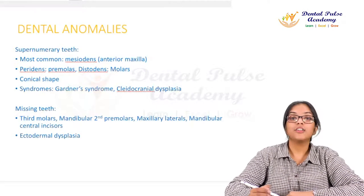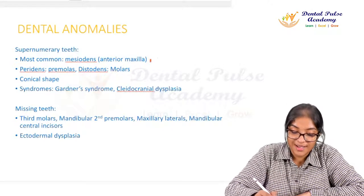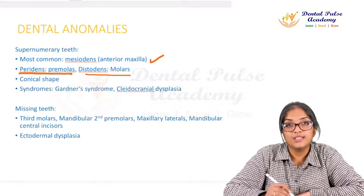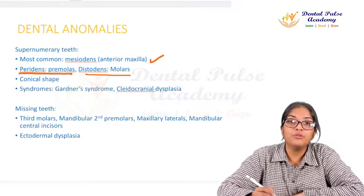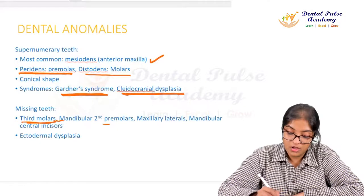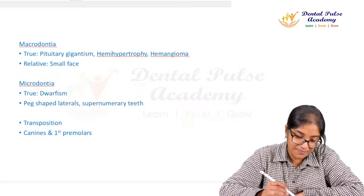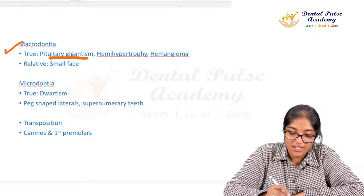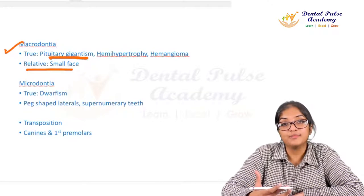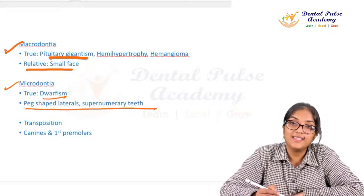Dental anomalies: the most common supernumerary tooth is mesiodens in the anterior maxilla. Peridens refers to supernumerary premolars; distodens refers to supernumerary molars. Supernumerary teeth are associated with Gardner syndrome and cleidocranial dysplasia. The most commonly missing tooth is the third molar, followed by mandibular second premolar; missing teeth are associated with ectodermal dysplasia. True macrodontia is seen in pituitary gigantism and hemihypertrophy; true microdontia only in dwarfism.